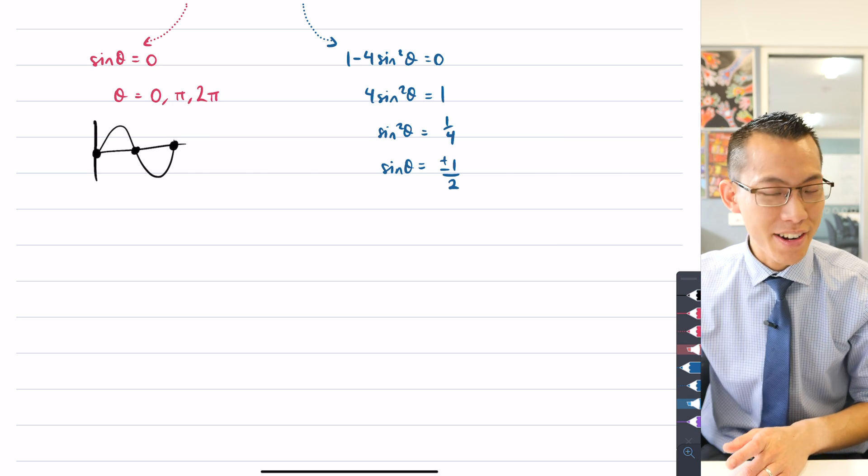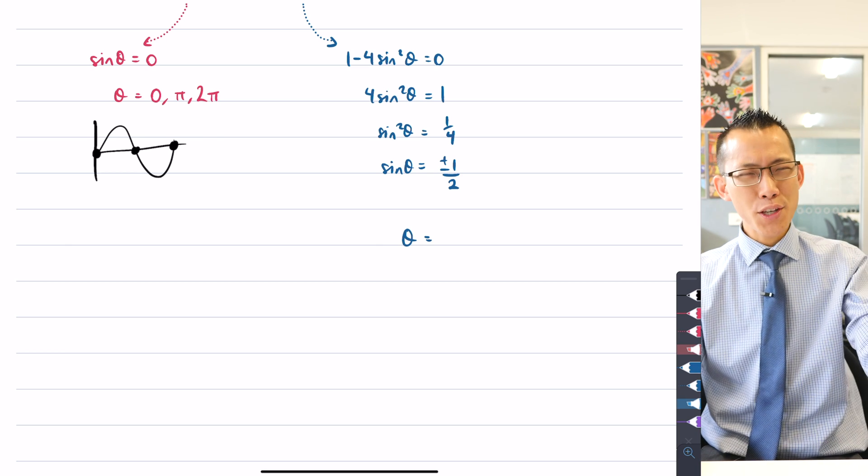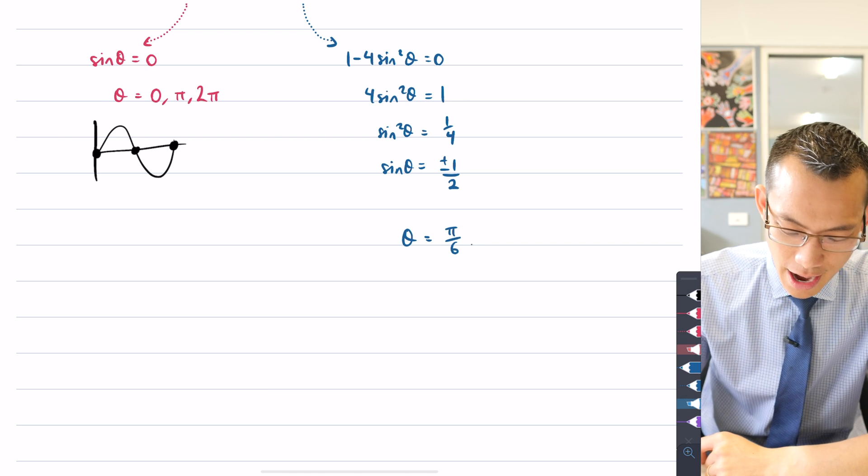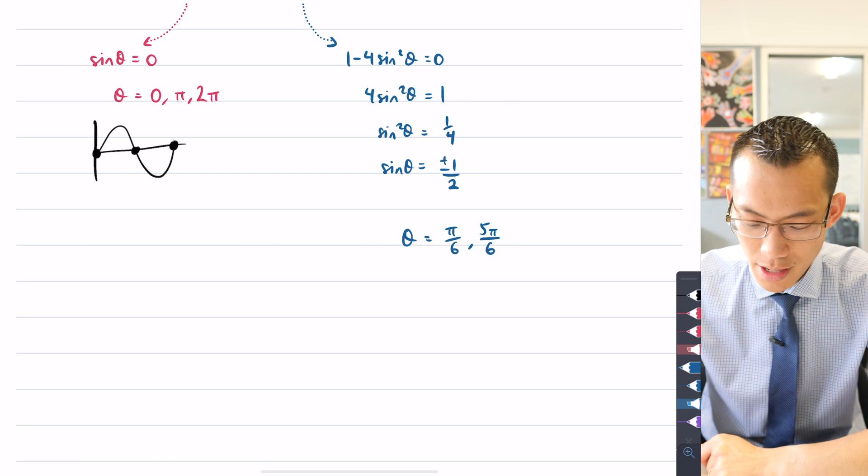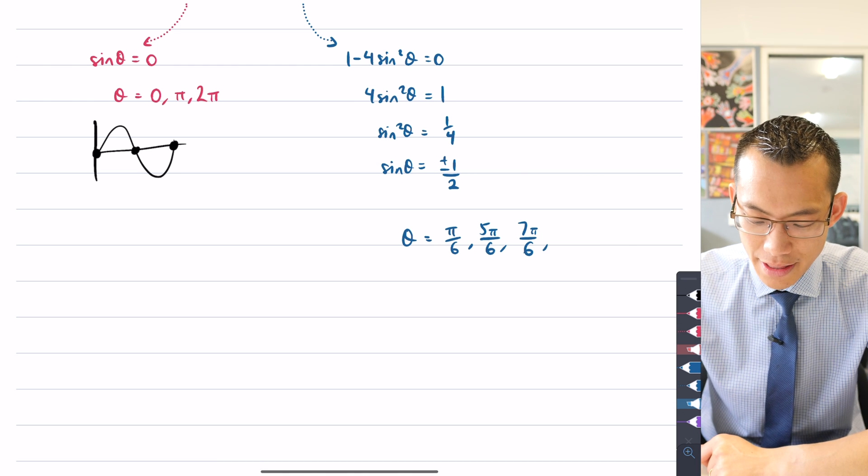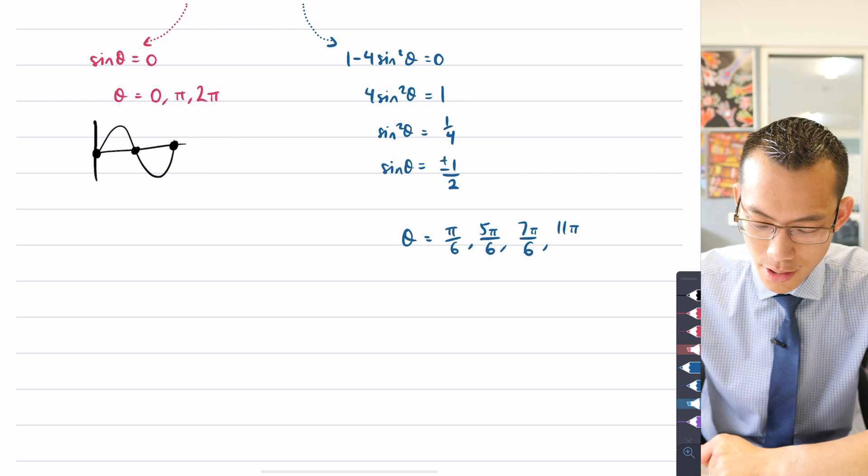So I'm going to get a quadrant 1, 2, 3, and a 4 answer. So therefore, theta is going to be equal to, first quadrant answer for sinθ equals a half is just π/6. Your next one is going to be π, take away that base angle. So that'll be 5π/6. Your next one will be 7π/6 because that's π plus your base angle. And then lastly, 2π minus your base angle will be 11π/6.